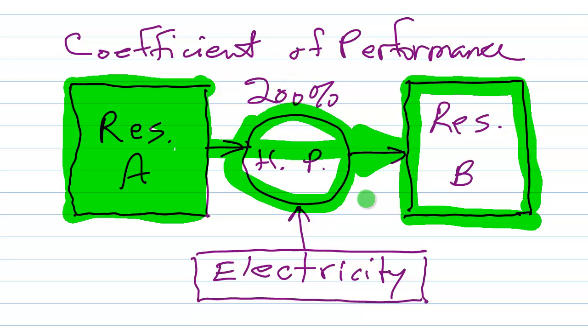Now if you have 200% coefficient of performance, what that means is that the ratio of the energy transferred from reservoir A to reservoir B by this heat pump, the ratio of the energy transferred to the amount of electrical energy that it takes to move that energy, that is the electrical energy that it takes to make the heat pump move that energy. And if you still have a little bit of a problem, if you think that somehow that too is impossible, just think for a moment about the moons of Saturn and then return to the Earth.